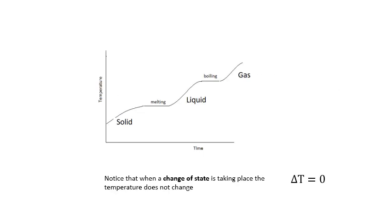That was a substance cooling down. A substance warming up is just the other way around. So solid warming up, then the solid melts at the melting point, the temperature stays the same. Then the liquid warming up, and then the liquid evaporates, the temperature stays the same. And then when it's all gas, then a gas warming up, heating up. Notice that when a change of state is taking place, delta T equals zero. The temperature does not change.